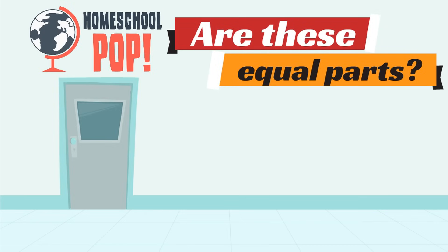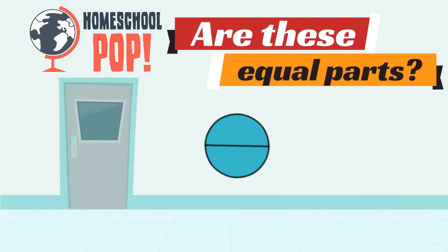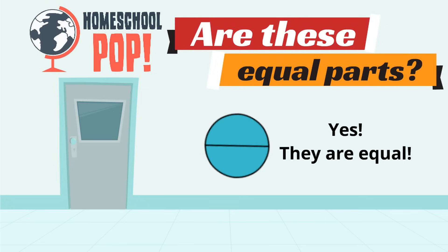Here is our first picture. We're going to look to see if this picture shows equal parts. This picture shows how many parts? Two. This picture shows two equal parts, and we know they're equal because they're the same size.